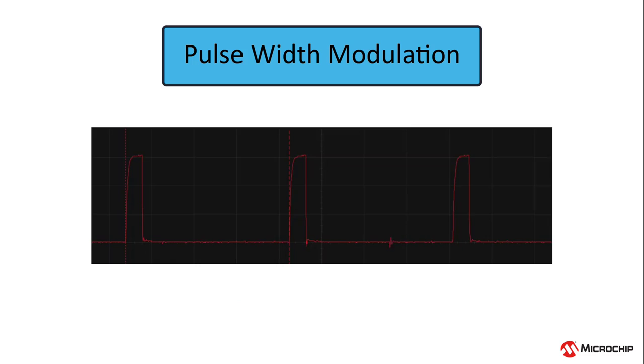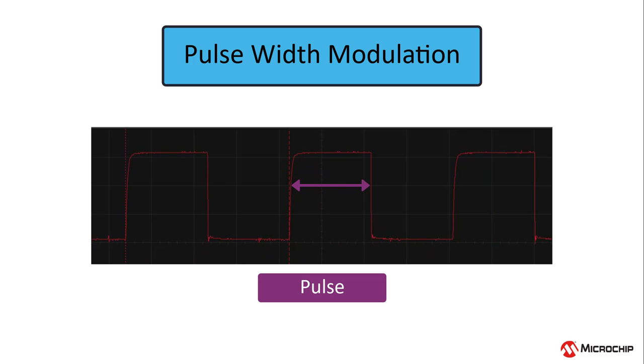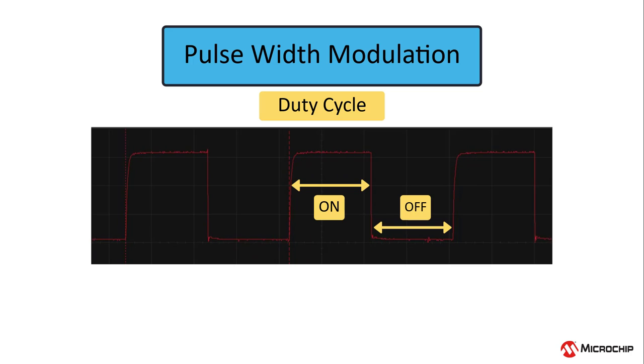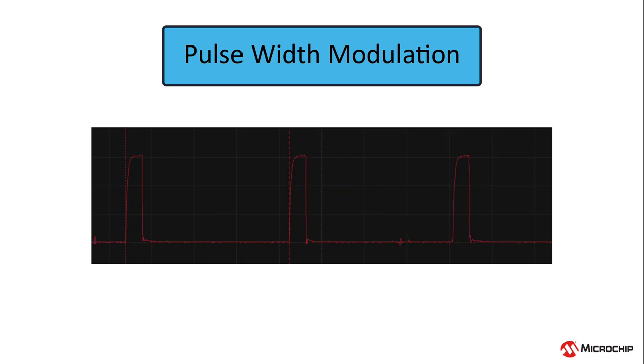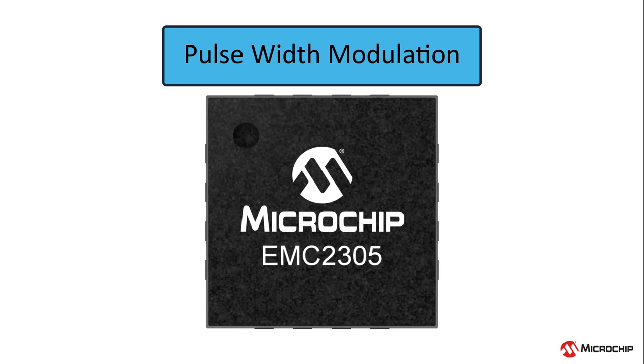The PWM signal is a very common method used to control the speed of the fan. It's what the name implies: a pulse sent to the fan driver circuitry whose width can be modulated based on the desired speed. The term duty cycle is used to describe the ratio of how long the pulse is on versus off. A 50% duty cycle means the pulse is on 50% of the time and off 50% of the time. A 10% duty cycle would mean it's on 10% of the time and off 90% of the time.